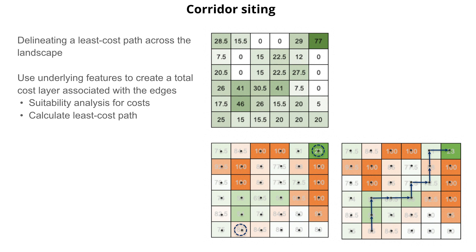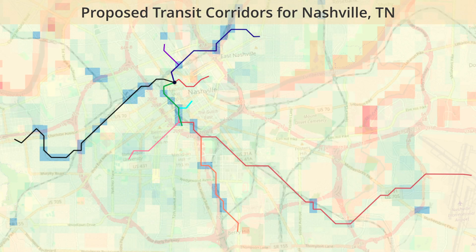Importantly, this includes methods for quantifying qualitative data on location preferences and integrating these findings into a quantitative evaluation process. In this course, we will apply these basic suitability analysis techniques in the context of planning for the location of a new transit line, and then apply linear optimization techniques to find the least cost path based on the composite suitability analysis to site the specific path for a new transit line.